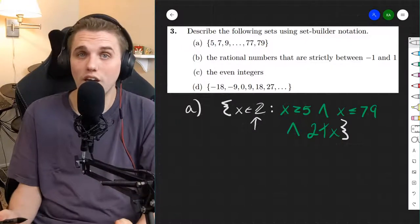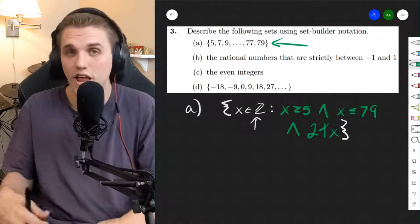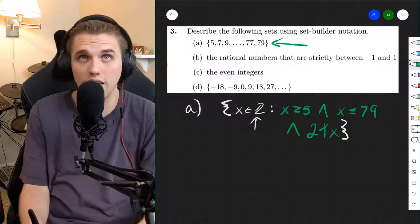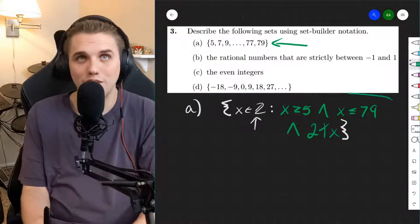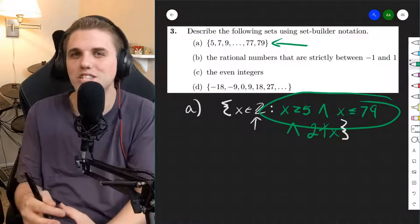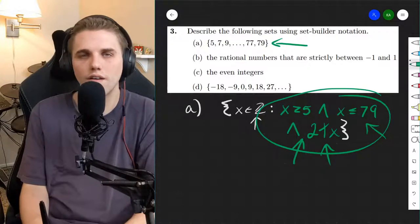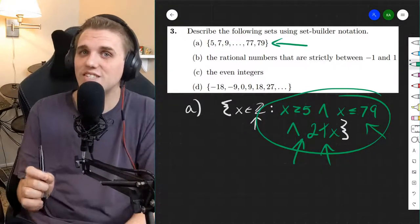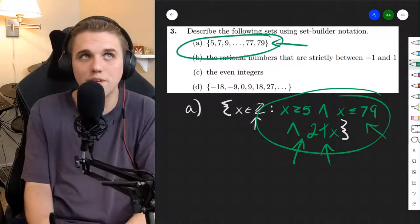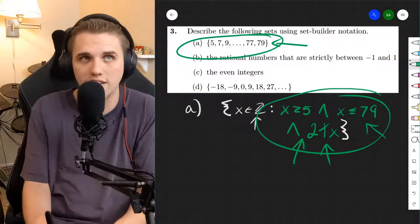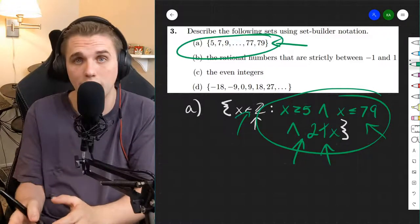So this is one way of setting up set builder notation for specifically this set. Now, there are multiple answers here because you could say this in many different ways. But so long as this rule needs to be specific as a sort of gate so that we only accept certain members into this set. We don't want the entire universe of integers. We just want specifically the odd integers from 5 to 79.